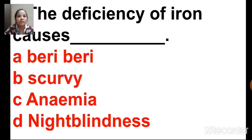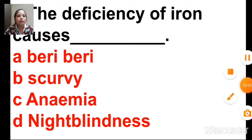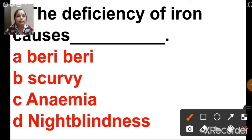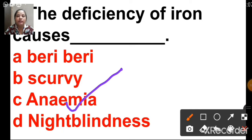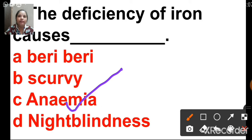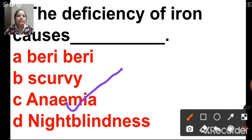The deficiency of iron causes — the options are beri-beri, scurvy, anemia, night blindness. The correct answer is C — anemia. The deficiency of iron causes anemia. Deficiency of vitamin B causes beri-beri, deficiency of vitamin C causes scurvy, and night blindness is caused by the deficiency of vitamin A.